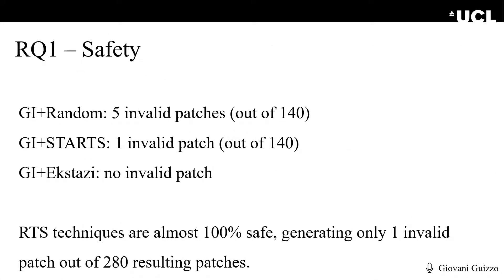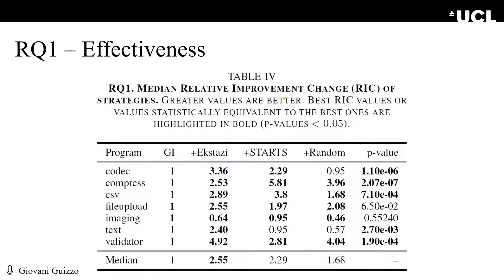Answering RQ1 about safety, we found that it is almost 100% safe to use RTS techniques with GI. Out of 280 patches generated with the two state-of-the-art techniques, only one patch failed the full test suite. However, we found that the relative change in improvement — the quality of the solutions — improved with RTS by up to 5.81 times. On average, GI with RTS provided from 2.2 to 2.5 times better improvement, with large effect sizes in 86% of the cases.